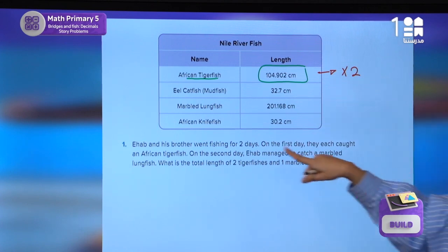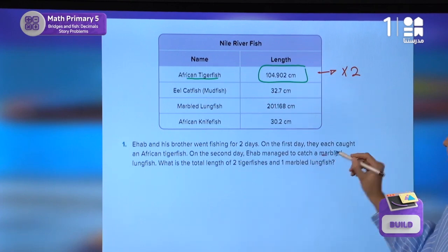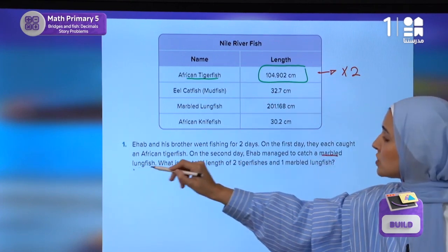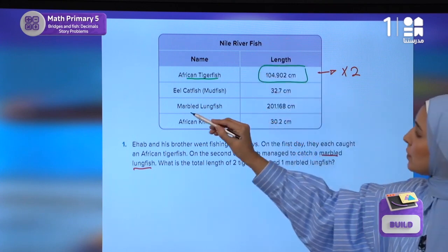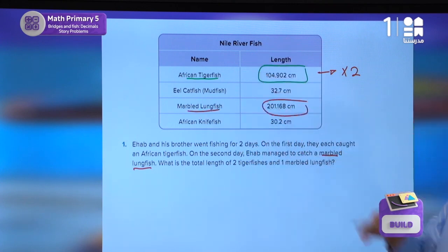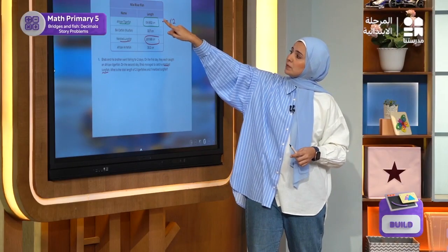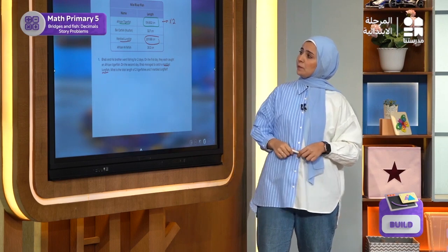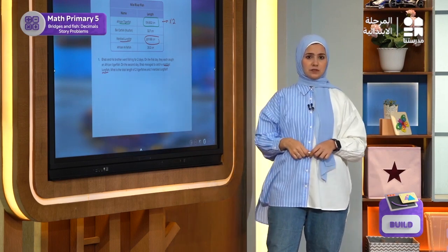What is left? We also need to add the last type of fish, which is the marbled long fish. Where is the marbled long fish? It's this one. So I have two instances of the tiger fish number and one instance of the marbled long fish number.